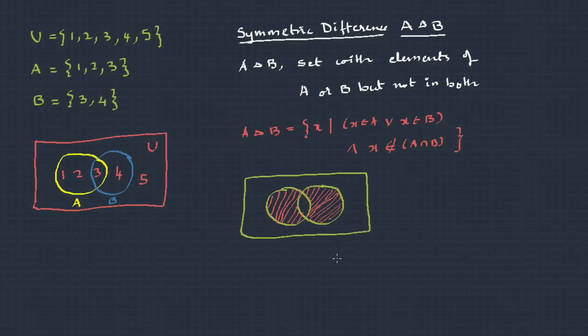And x does not belong to A and B. So it's like from A and B together we just need to remove the common elements. So here the common element is 3. So A delta B will be 1, 2 and 4.